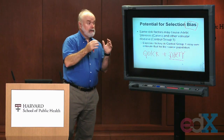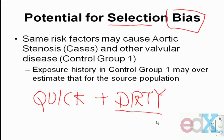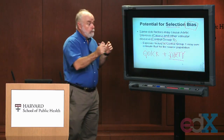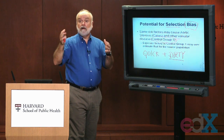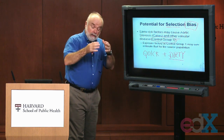Let's talk about the potential for selection bias, starting with control group one. Those 110 people did not have aortic stenosis — that's good. But they underwent cardiac catheterization and had another disease in one of their other valves. How do we know the risk factors that cause aortic stenosis are not also causing that other valve disease? It may well be that smoking causes both conditions. So when you use control group one, you are assuming their smoking history reflects that of the baseline population — the cohort that gave rise to the 105 cases. And maybe smoking causes both.